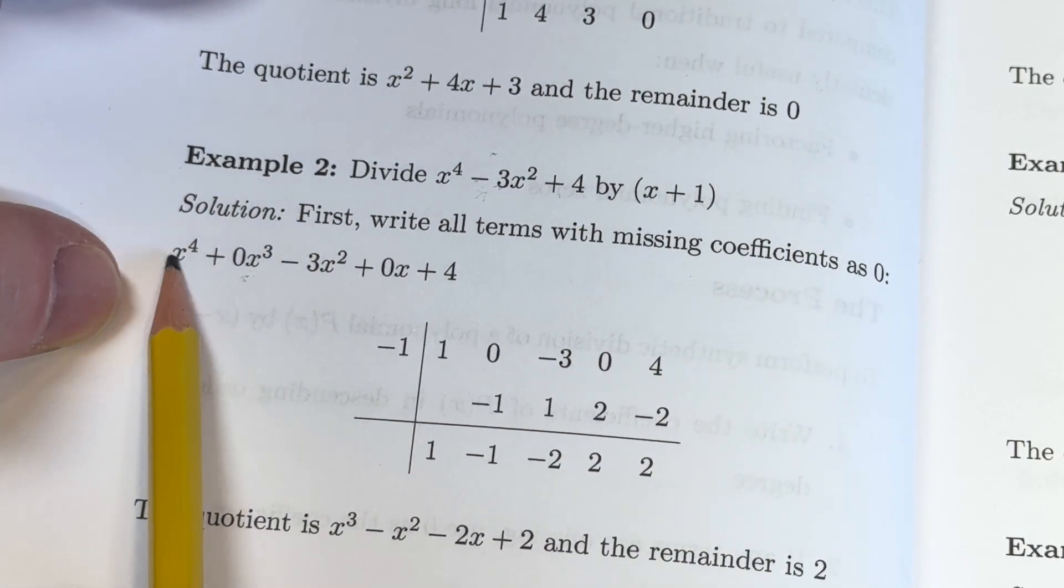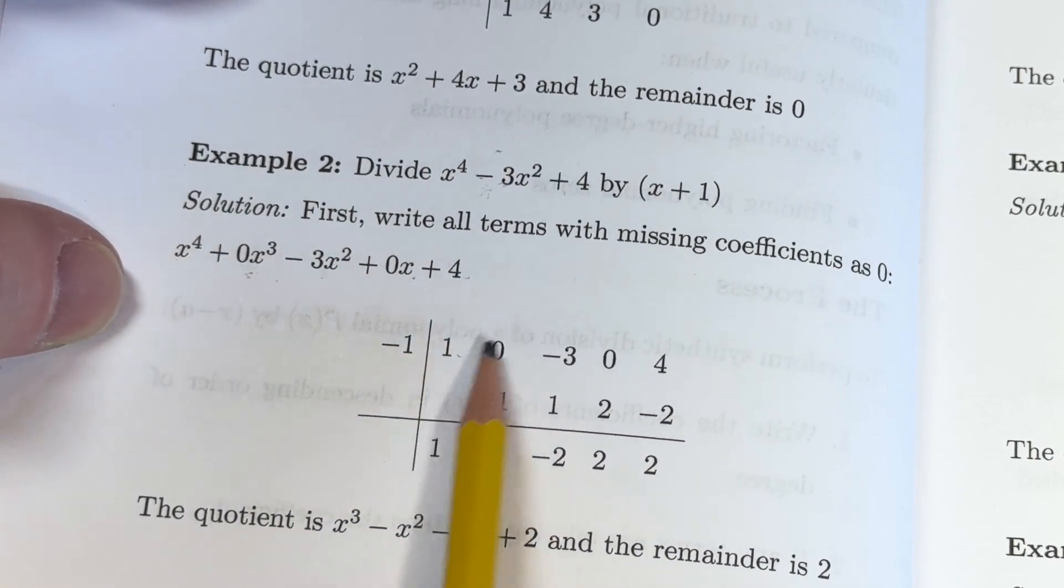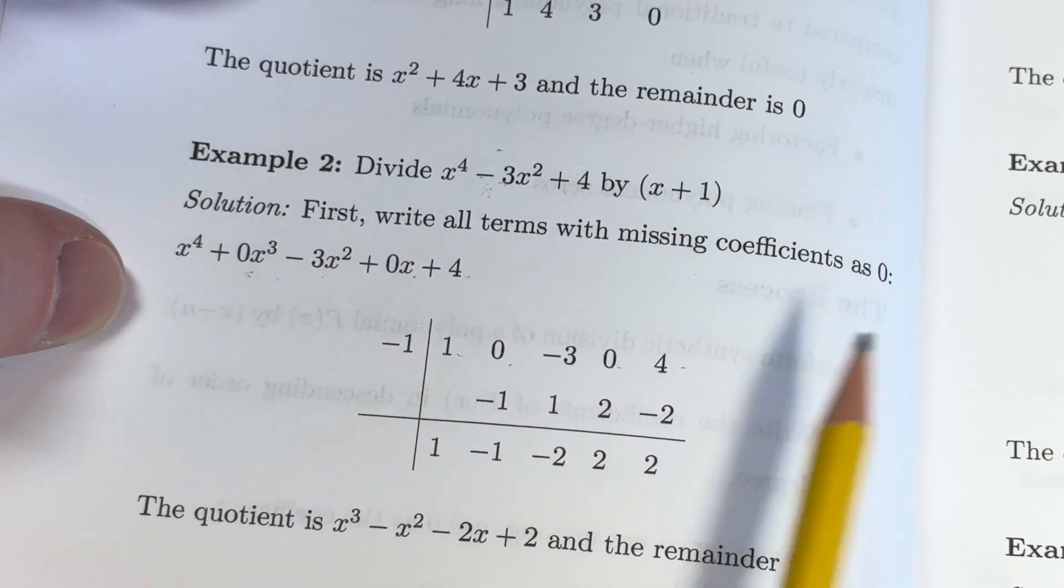Then you write down the coefficients. So 1, 0, negative 3, 0, 4. We're also missing the x term. So 1, 0, negative 3, 0, 4. Looks good.